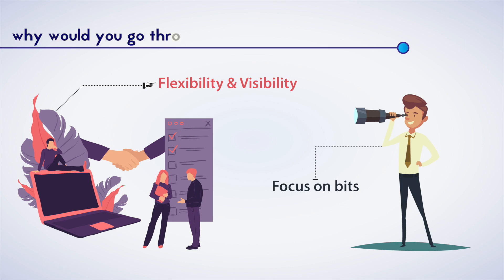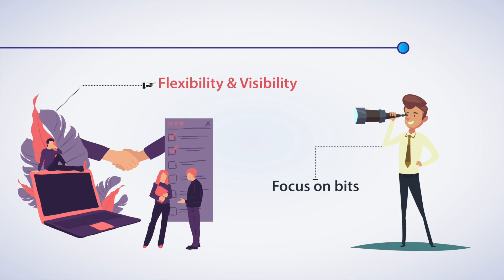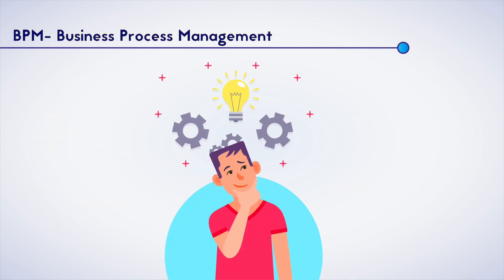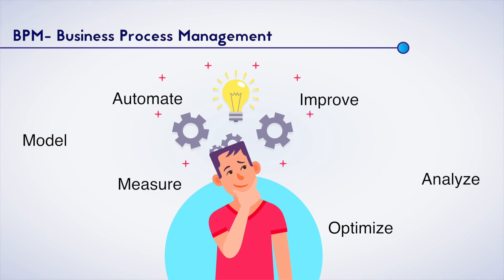You can now ask why would you go through this complex structure to manage your business processes. The answer is simple. The process will effectively improve the flexibility and visibility of your business logic. JBPM will help you focus on the bits that require your attention, and the rest can be taken care of by the BPM. BPM stands for Business Process Management. It is a form of structure in business management which is used to model, analyze, improve, measure, optimize, and automate business processes.